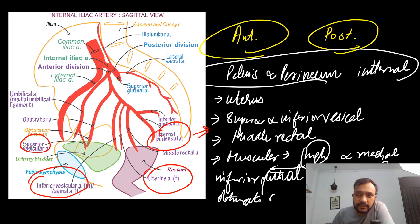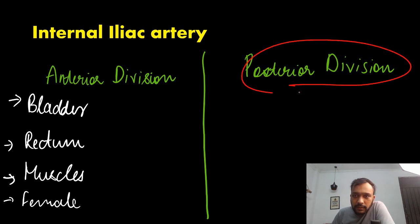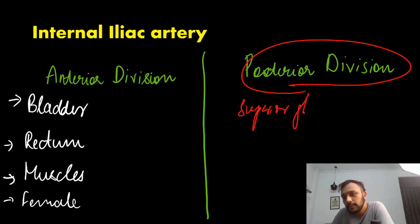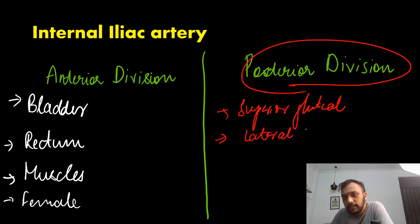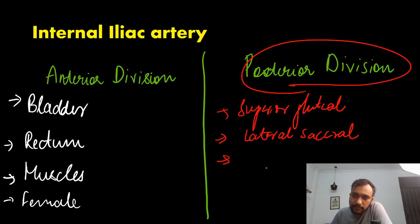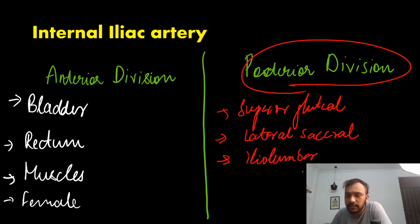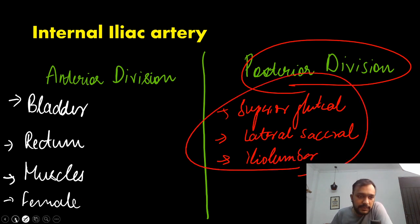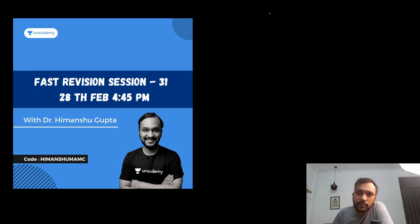Now talking about the posterior division — there are a few branches. One branch for the hip: that is your superior gluteal artery. Then we have one branch for the sacrum: that is your lateral sacral artery. Remember, the median sacral artery is a direct branch from the aorta. And then we have another branch: that is your iliolumbar artery. These are the branches of the internal iliac artery that you should be aware of.